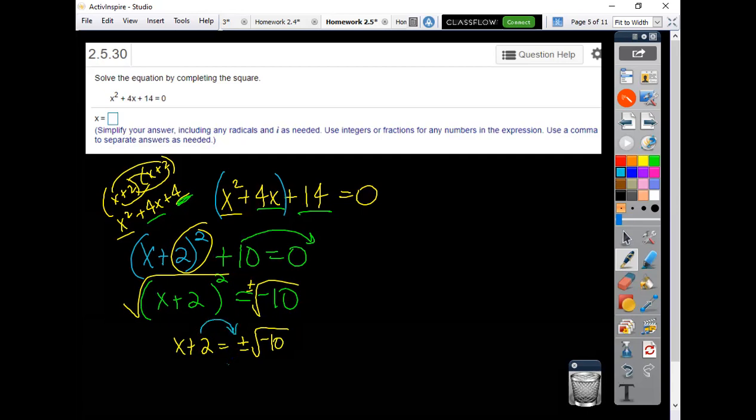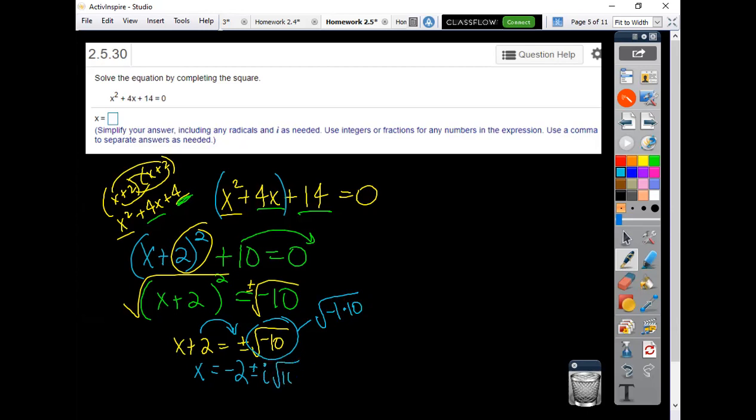Subtract 2 over to this side. The square root of negative 1 because this is like the square root of negative 1 times 10. So that square root of negative 1 gets out as an i and the square root of 10 for my two answers there.